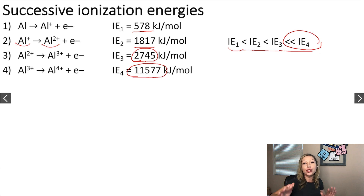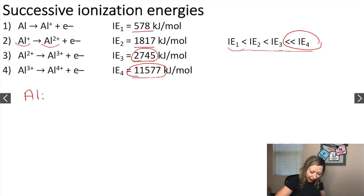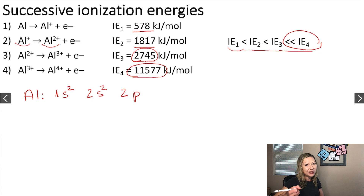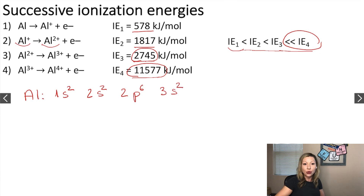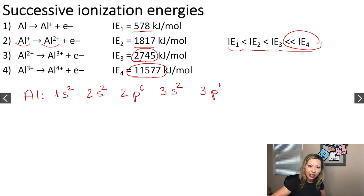Why is there such a huge jump? Let's take a look at the electron configuration of aluminum. Aluminum is the 13th element in the periodic table, so it has 13 electrons. We first fill up the 1s orbital with two electrons, then the 2s with two electrons, then the 2p with six electrons. Then the 3s gets two more — that's 12 electrons total — and the remaining one electron goes on the 3p orbital as 3p1.